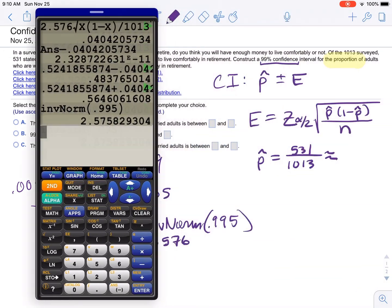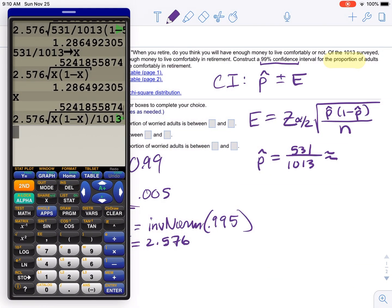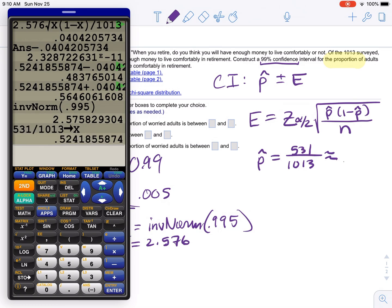That is equal to 0.5242. Now, I did store it in X right here. See? Now...